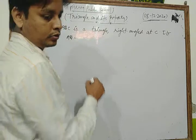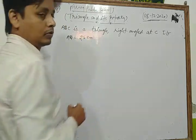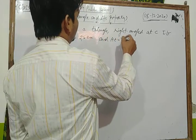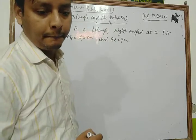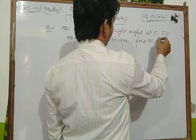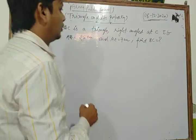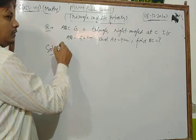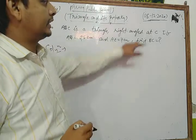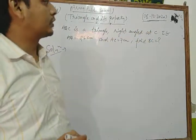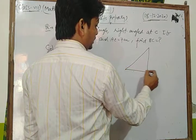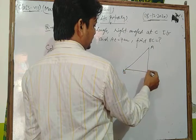The question states: ABC is a triangle right-angled at C. If AB equals 25 centimeters and AC equals 7 centimeters, find BC. First of all we draw our right-angled triangle with the right angle at C, meaning angle C equals 90 degrees.